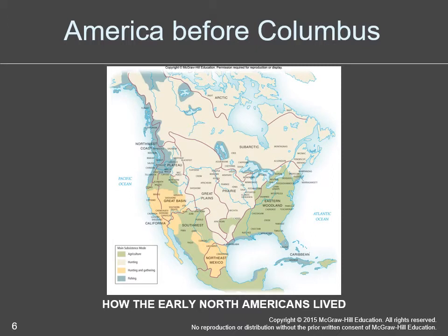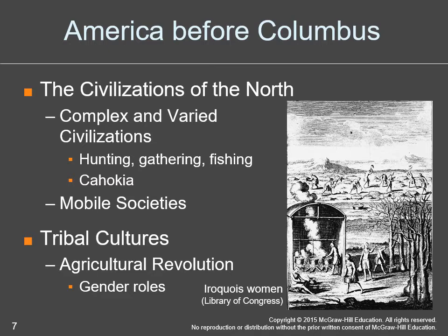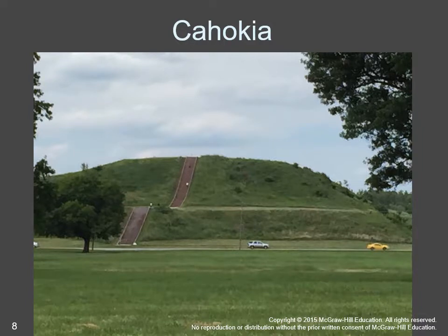The peoples that came across settled in different parts — here's some of the map. An important takeaway is that depending on where they settled, it largely dictated the type of society they had, particularly their economy. Civilizations further north were hunting, gathering, and fishing societies. Depending on location, there were many tribal cultures, some had mastered agriculture, and many societies had gender roles where women cared for children and men did the hunting and gathering.